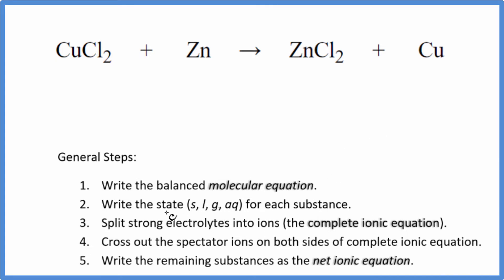Now we can write the state for each substance. If you know your solubility rules, chlorides are very soluble. So we're going to write AQ for aqueous. This is going to dissolve and dissociate into its ions. Zinc, that's just a metal. Chloride again, very soluble, aqueous, and then copper, metal.